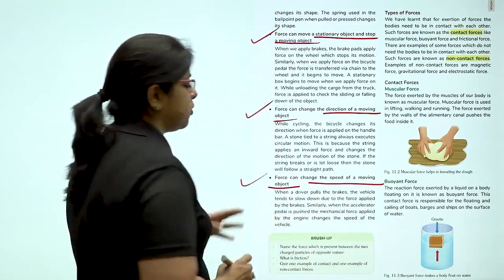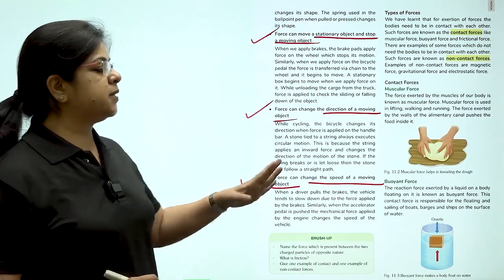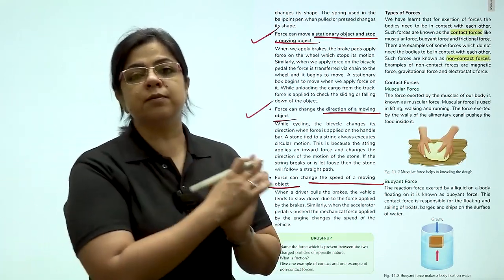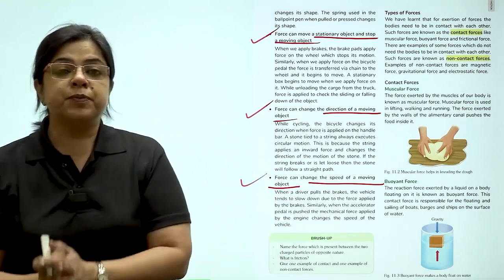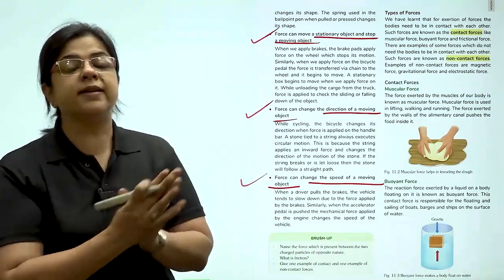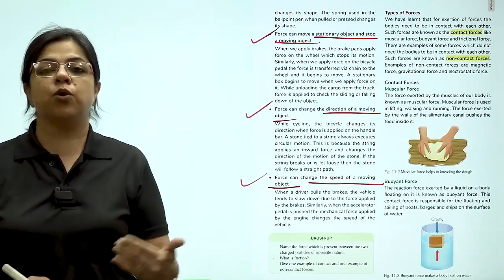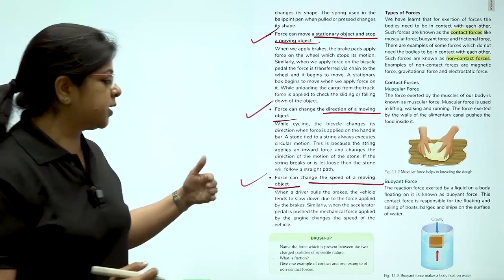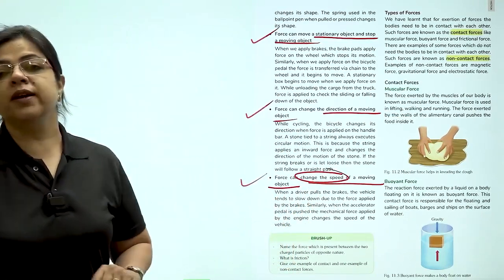It can change the speed of a moving object. Taking the same example here, when the batsman is going to hit a ball, he will hit it with a great force. So, the speed at which he is going to hit is going to be definitely more than the speed at which the ball was originally coming. So, what is he doing? He is changing the speed of a moving object.